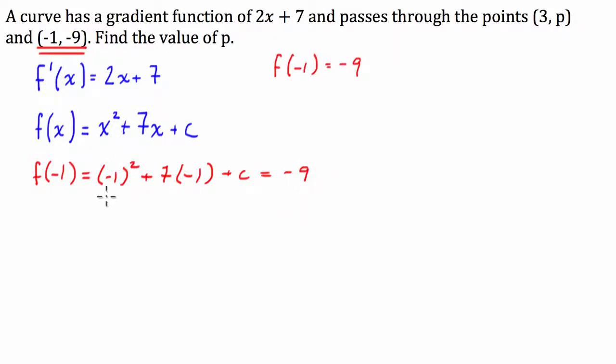So negative 1 squared is just 1. 7 times negative 1 is minus 7. Plus c equals negative 9. Okay. So from here, 1 minus 7 is negative 6. If I take this negative 6 across to the other side, I'm going to add 6 to both sides. So I've got c is equal to negative 3.